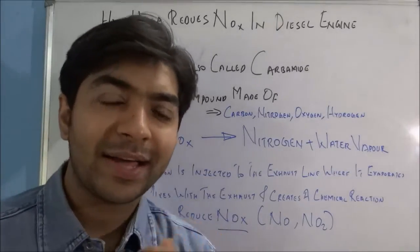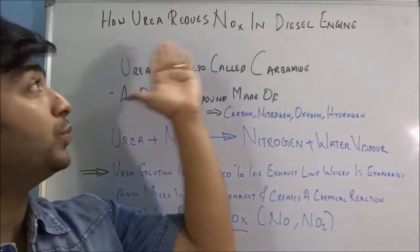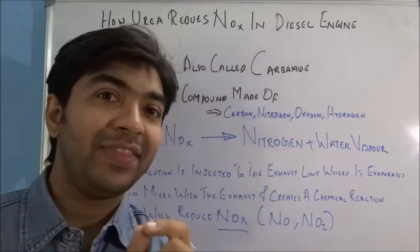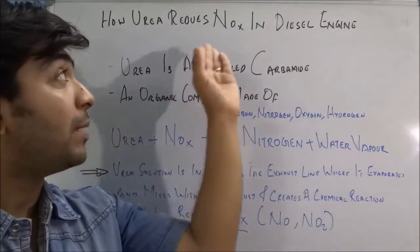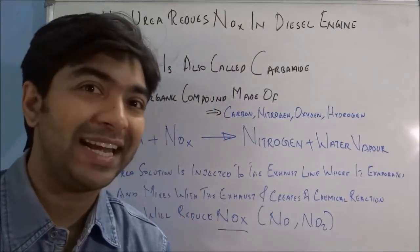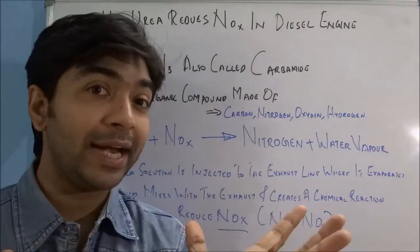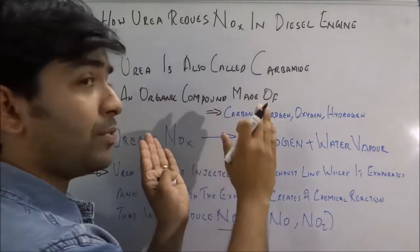Hi, welcome back. Today let's learn about how urea reduces NOx in diesel engines, or the chemical reaction that reduces the amount of nitrogen oxide in diesel engines. Normally, urea is also called carbamide, and it's a component made of carbon, nitrogen, oxygen, and hydrogen.